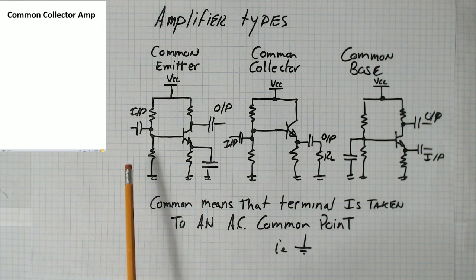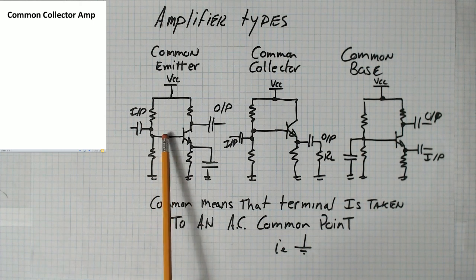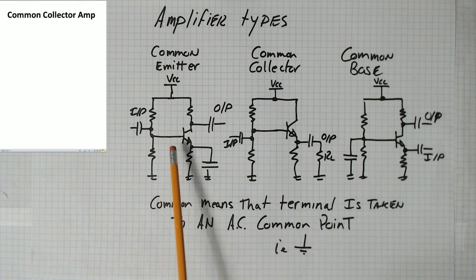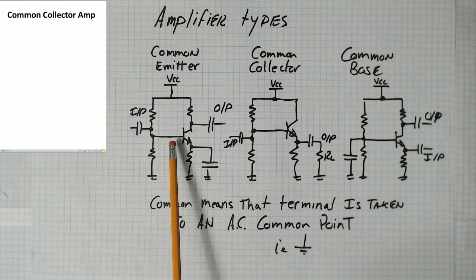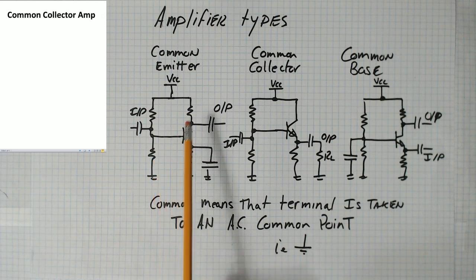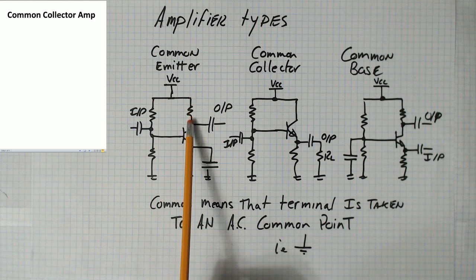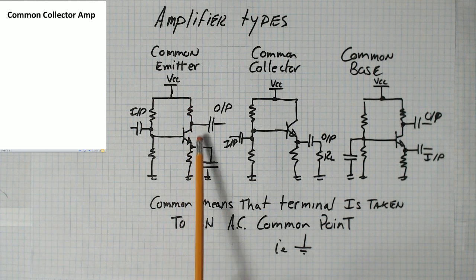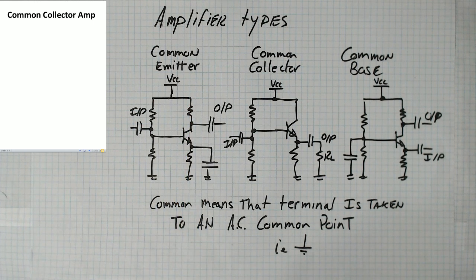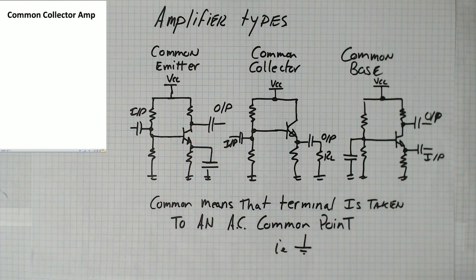So the amplifier that we've been looking at so far is called the common emitter amplifier, and it's this one here. In the common emitter amplifier, we apply an input into the base through a capacitor, and that wiggles the base voltage up and down a little bit, causing the base current to go back and forth. That gets amplified by the transistor into a current going through this collector, and then this voltage goes up and down.